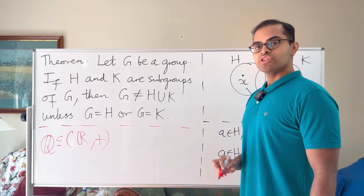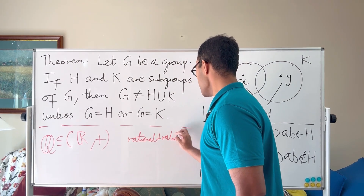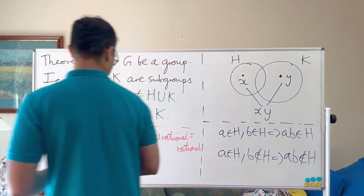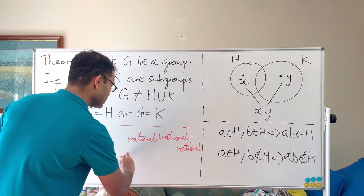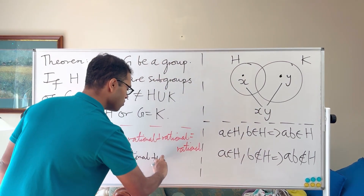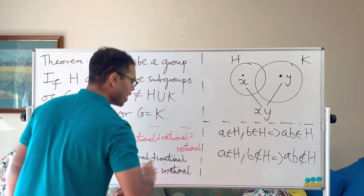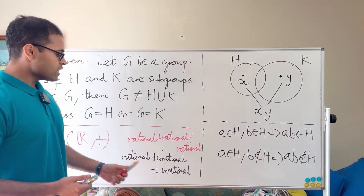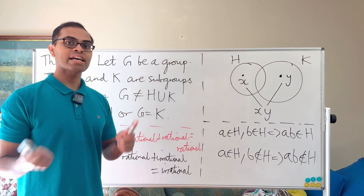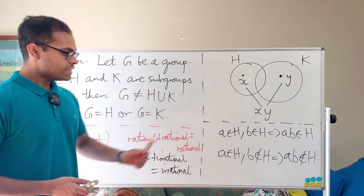One intuitive way to see this is through the group of real numbers under addition, where the rational numbers form a subgroup. Rational plus rational is rational — that's closure. Now if we change this: rational plus irrational is irrational. Why? Because if it were rational, we could subtract and deduce the irrational number is a difference of two rationals, hence rational — a contradiction.